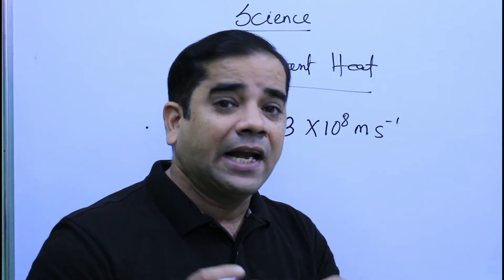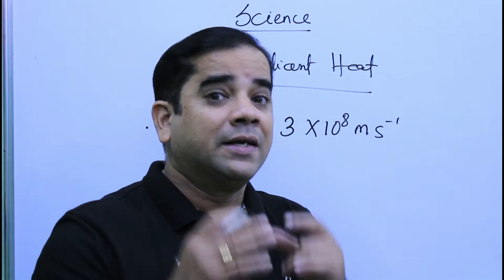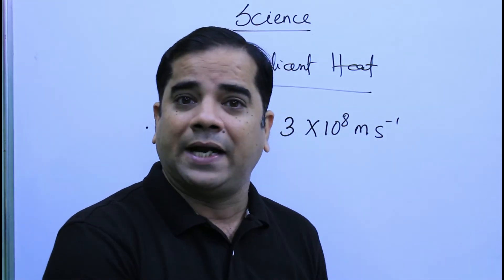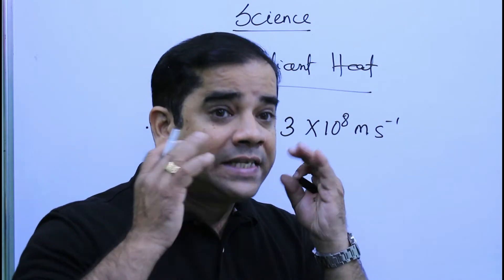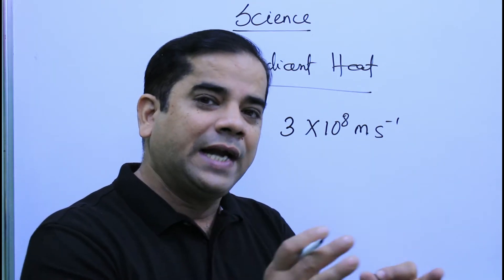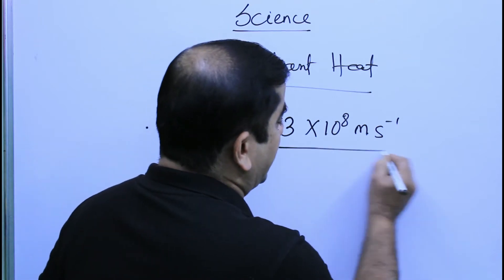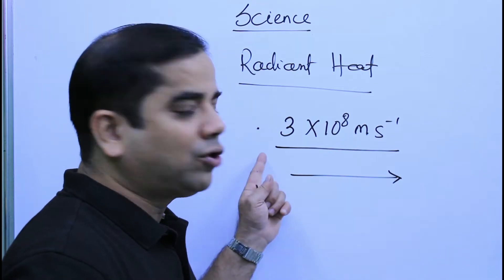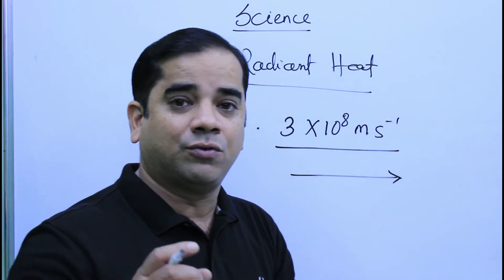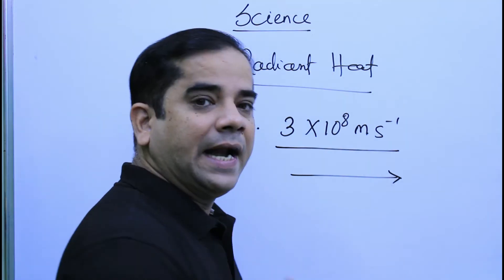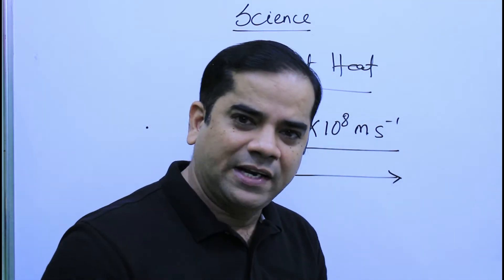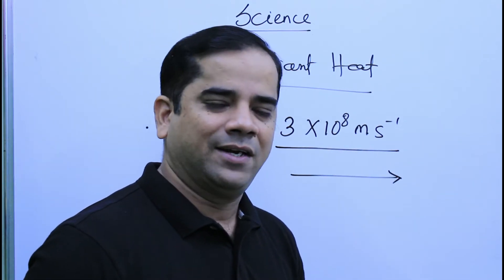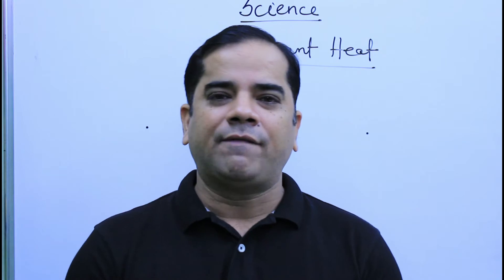The difference is that radiation cannot create the sensation of sight. We can see any object because of light, but radiation doesn't help us see any object — it only transfers heat energy. Radiation also travels in a straight line, just like light, and in vacuum it travels at the speed of 3 × 10⁸ metres per second.